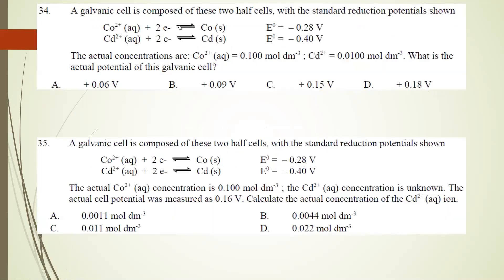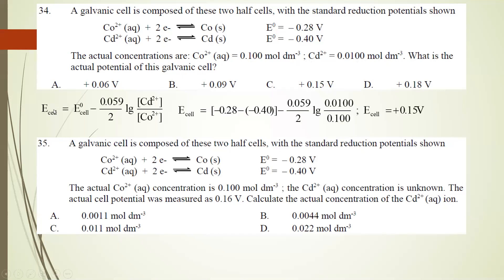Number 34: a galvanic cell is composed of two half-cells. Co2+/Co, E0 = -0.28 V; Cd2+/Cd, E0 = -0.40 V. Actual concentrations: Co2+ = 0.100 mol and Cd2+ = 0.01 mol. Using the Nernst equation: E cell = E0 cell - 0.059/2 × log(Cd2+/Co2+). E cell = (-0.28 - (-0.40)) - 0.059/2 × log(0.01/0.10) = positive 0.15 V. The answer is C.